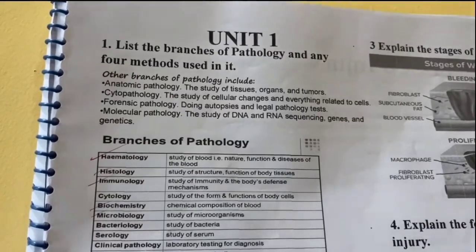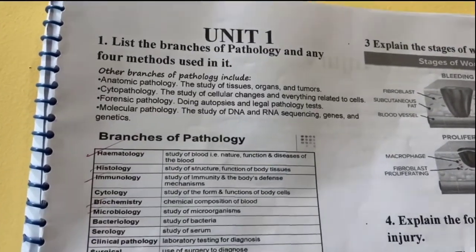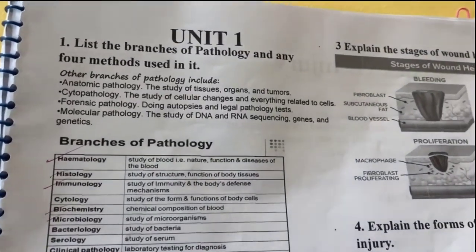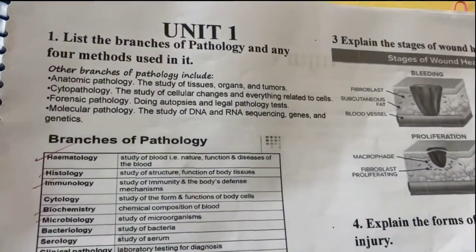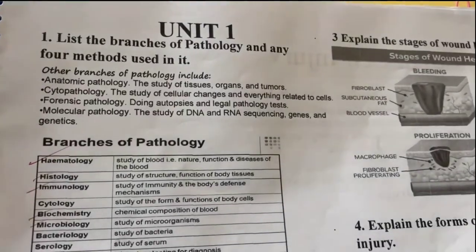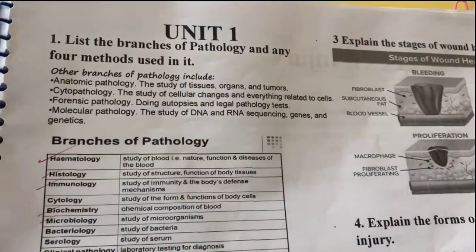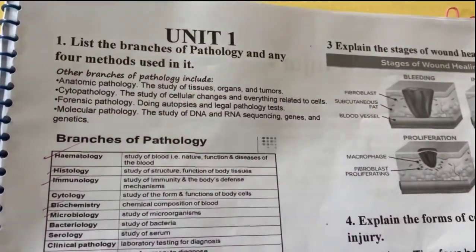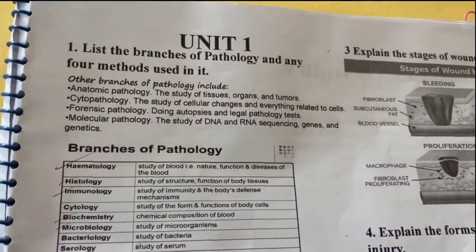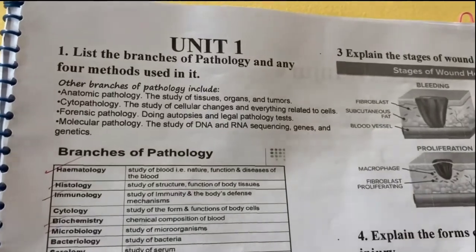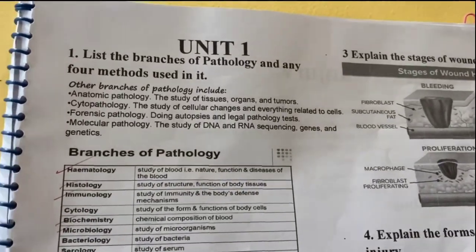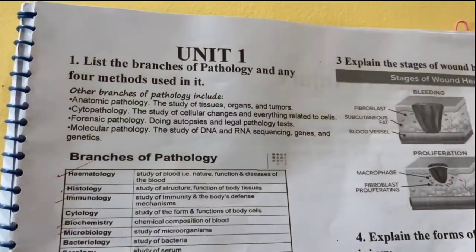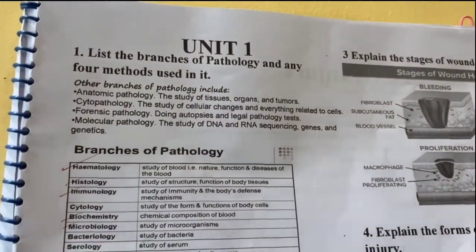Let's begin with Unit 1 of pathology. Unit 1 short answers we will discuss today. First question is: list the branches of pathology and any 4 methods used in it.